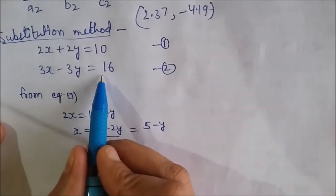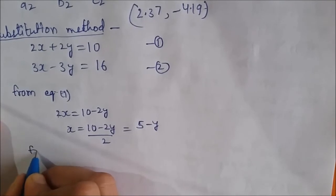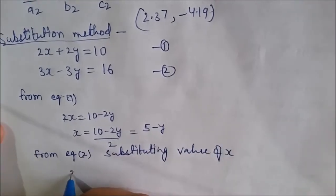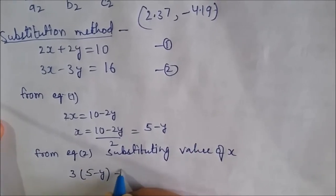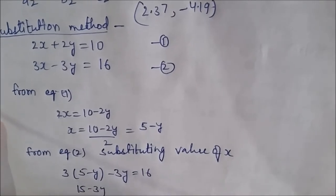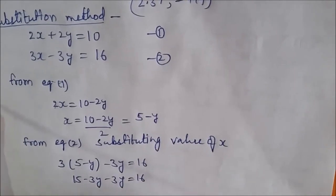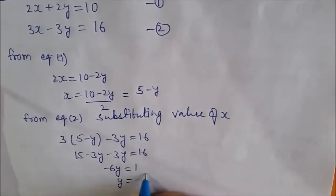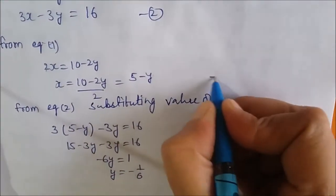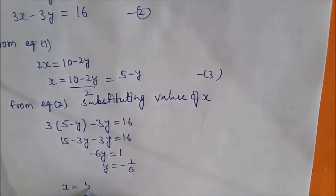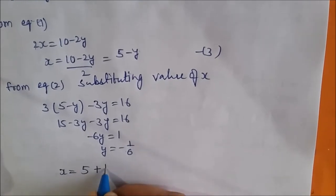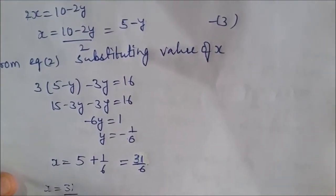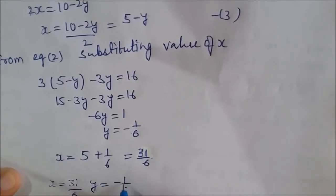Now we substitute the value of x into equation 2. We get 3 multiplied by (5 minus y) minus 3y equals 16, which gives 15 minus 3y minus 3y equals 16, so 15 minus 6y equals 16, giving minus 6y equals 1, and y equals minus 1 upon 6. Substituting this back into x equals 5 minus y gives x equals 5 plus 1 upon 6, which is 31 upon 6. So the solution is x equals 31 upon 6 and y equals minus 1 upon 6.